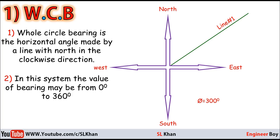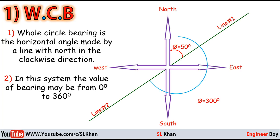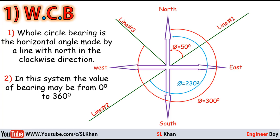Let's take a few examples. For line one in the first quadrant, we measure the angle from the north clockwise, and this is approximately 50 degrees. For line two, we also measure from the north clockwise, and this is approximately 230 degrees. For line three, we measure from the north clockwise toward the line, and this is approximately 300 degrees — because one quadrant is 90 degrees, so covering three quadrants gives 270 degrees, plus an additional approximately 30 degrees, giving 300 degrees.